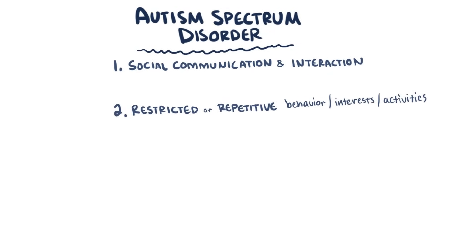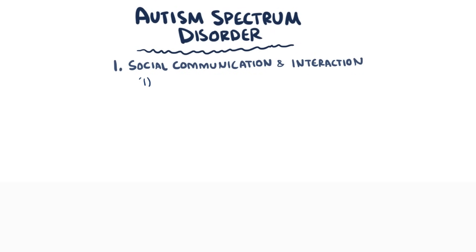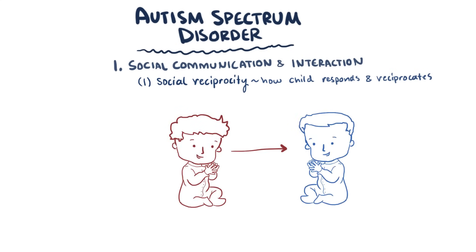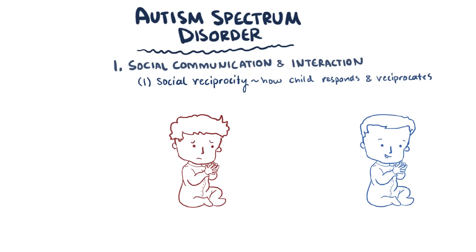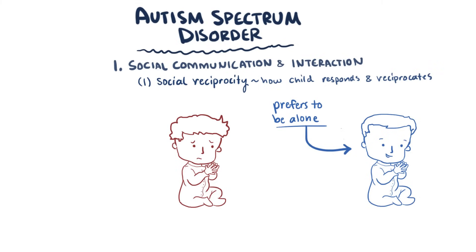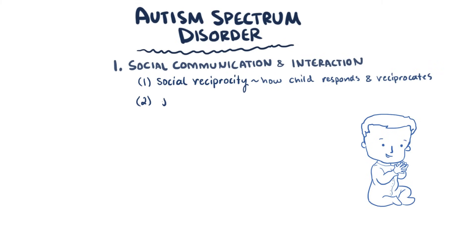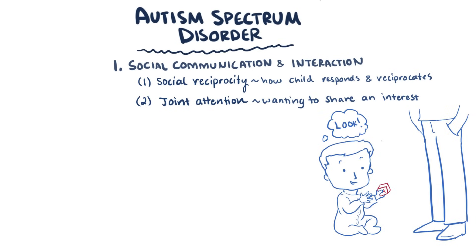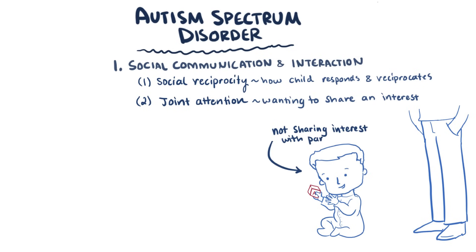For the social and communication area, there are four subcategories that clinicians look for deficits. The first is social reciprocity, which refers to how children respond or reciprocate in social interactions — how the behavior of one person influences the other, and vice versa. An example impairment might be preferring to be alone and not taking a role in social games. A second area is joint attention, which is the state of wanting to share an interest with someone else, like saying 'hey, check out this awesome thing I found.' An example impairment might be a child not sharing their interests or amusement in an object with their parent.